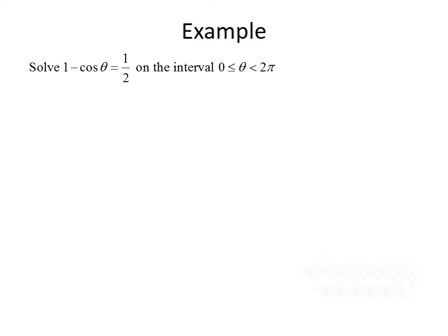Let's look at another example. This time we want to solve the equation 1 minus the cosine of theta equals 1/2 on the interval from 0 to 2π. We'll start with our equation, then subtract 1 from both sides, giving us negative cosine of theta equals negative 1/2. Then we divide both sides by negative 1, giving us cosine of theta equals 1/2.